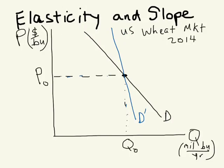Think about it: if we're thinking about two different prices, suppose price falls to P1. If we're on this black demand curve, quantity is going to respond to that price change fairly aggressively. By contrast, if we're on this steeper curve and we see the same price fall — notice if you're on a steeper curve passing through the same point — the associated quantity of response, called Q1 prime, is going to be much smaller.